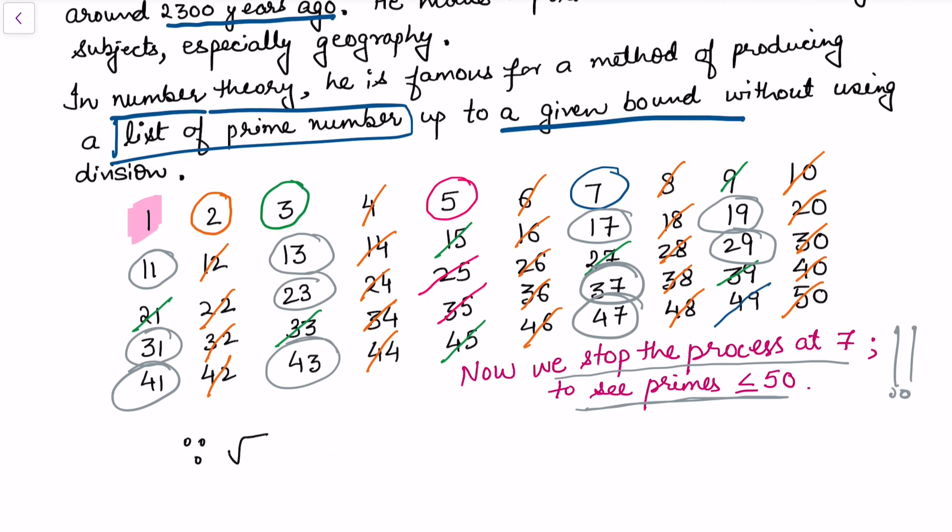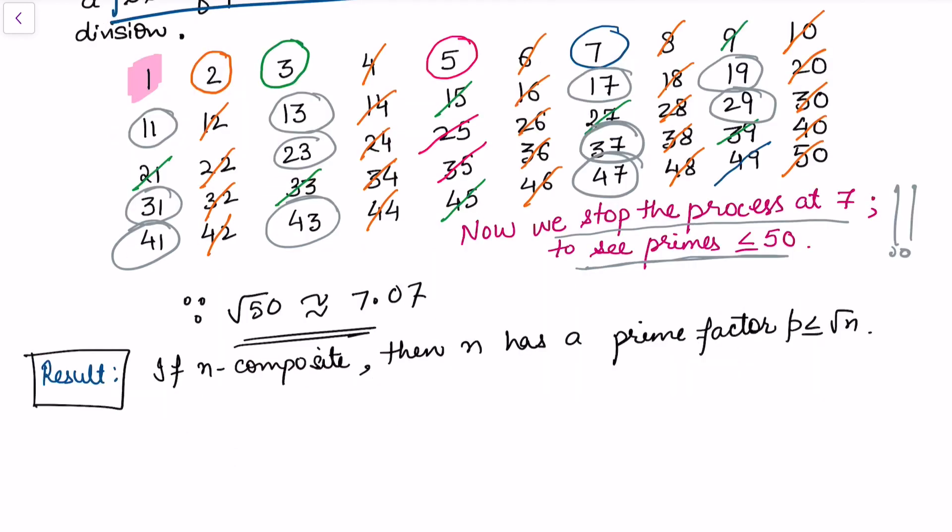Because the square root of 50 is approximately equal to 7.07. To support that, we have this result: if n is composite, then n has a prime factor p less than or equal to the square root of n. That is why we can use this result to stop the sieve process.